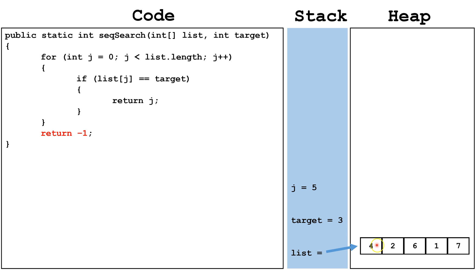If at any point the value 3 had been in the array, this would have been a true statement, and we would have returned that index, so the method that called it would know what index the number 3 was in. If 3 was present in multiple places, it would have returned the index of the first instance of 3, because the method always ends when we return something. The great thing about sequential searches is that they can work on a list whether it is ordered or unordered. Unfortunately, as in this case, we had to go through every single value to find out that the number 3 was not in the array.